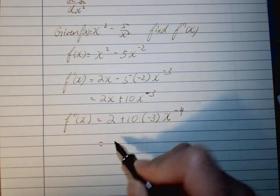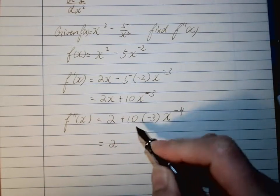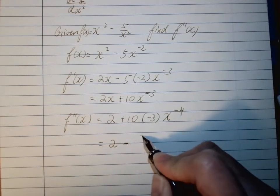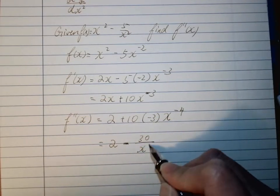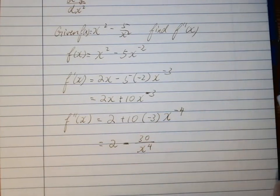That should be the answer, but I will fix it a little bit because I do not like it. So it becomes 2 - 30/x^4, and this is our f''(x).